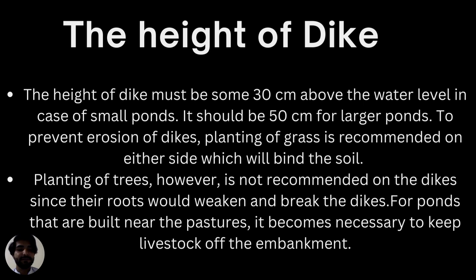The fourth component is the height of the dike. The height must be at least 30 centimeters above the water level. Various species live in different regions of water — some are bottom feeders, some mid-range feeders, and some surface feeders — so the dike height should be selected accordingly. For small ponds, 30 centimeters is enough, but for larger ponds with higher production, a 50-centimeter height dike is recommended. Planting grass on either side is also recommended to bind the soil and prevent erosion, but planting trees is not recommended as their roots can weaken and break the dikes.